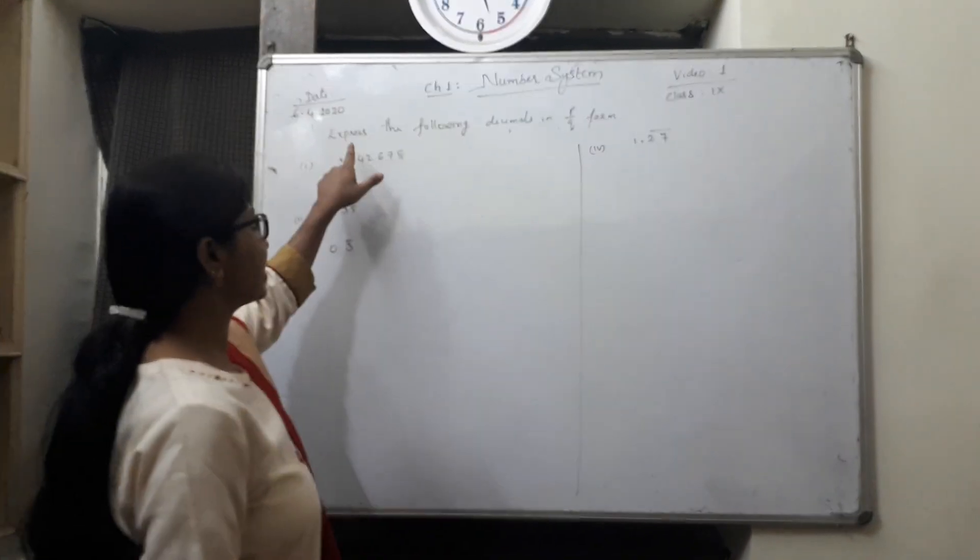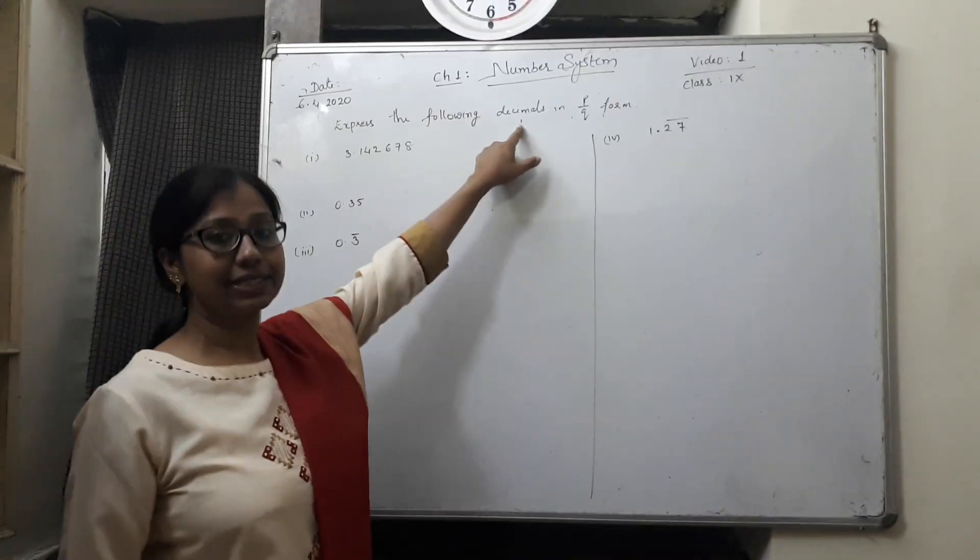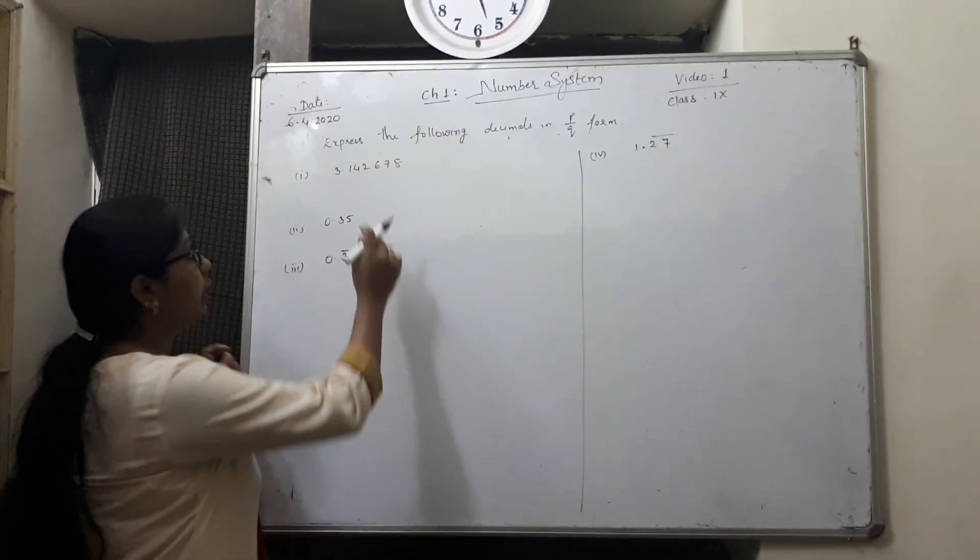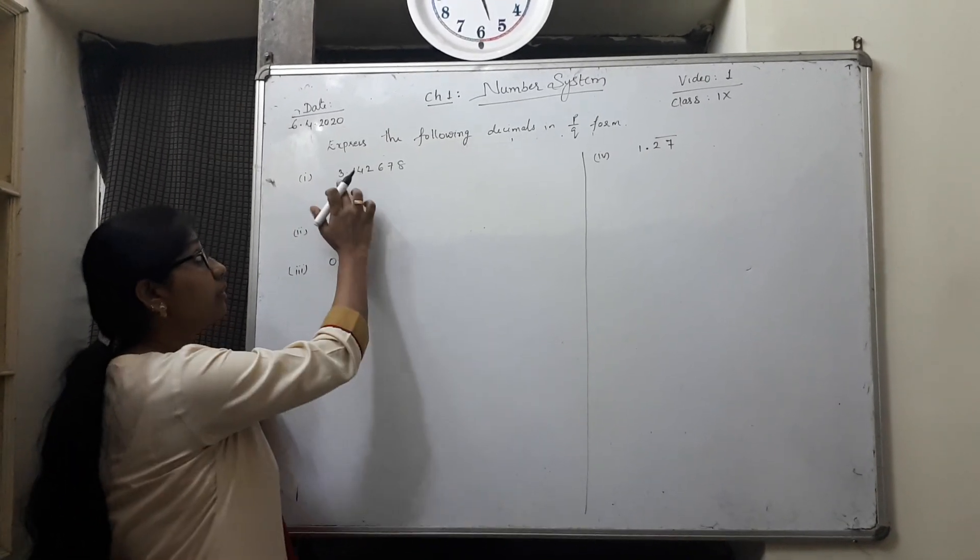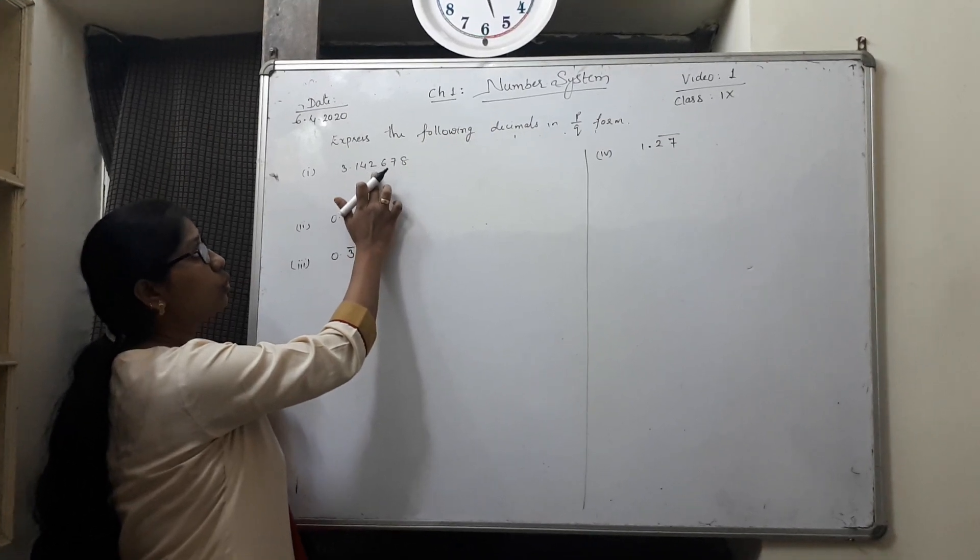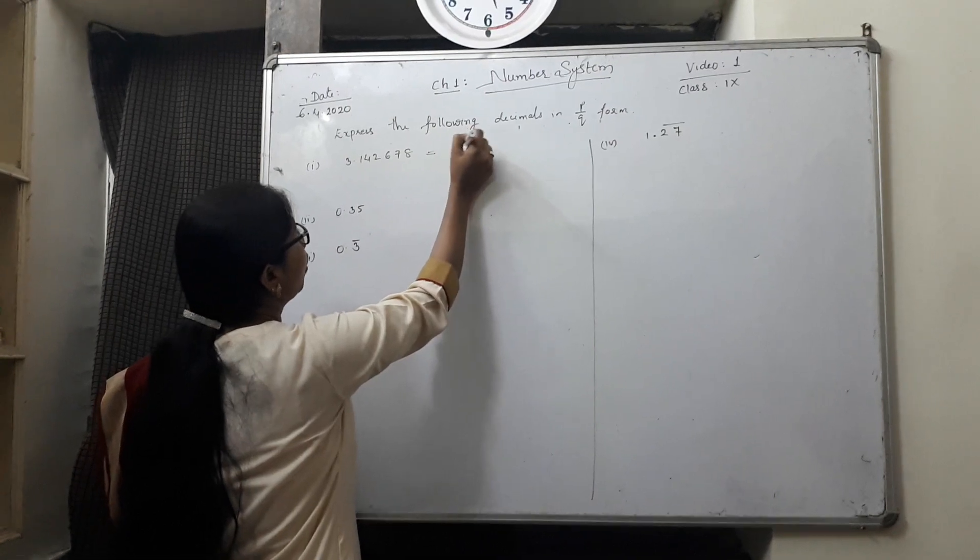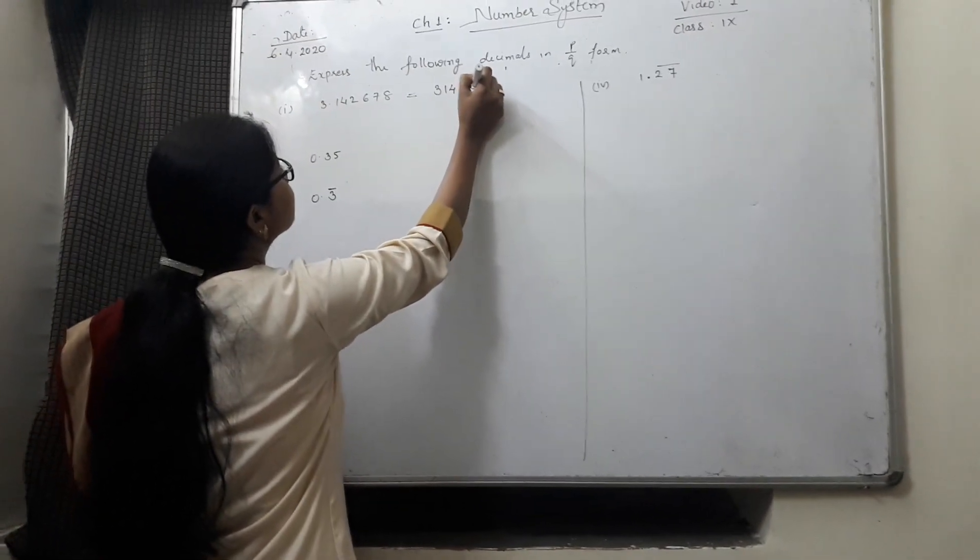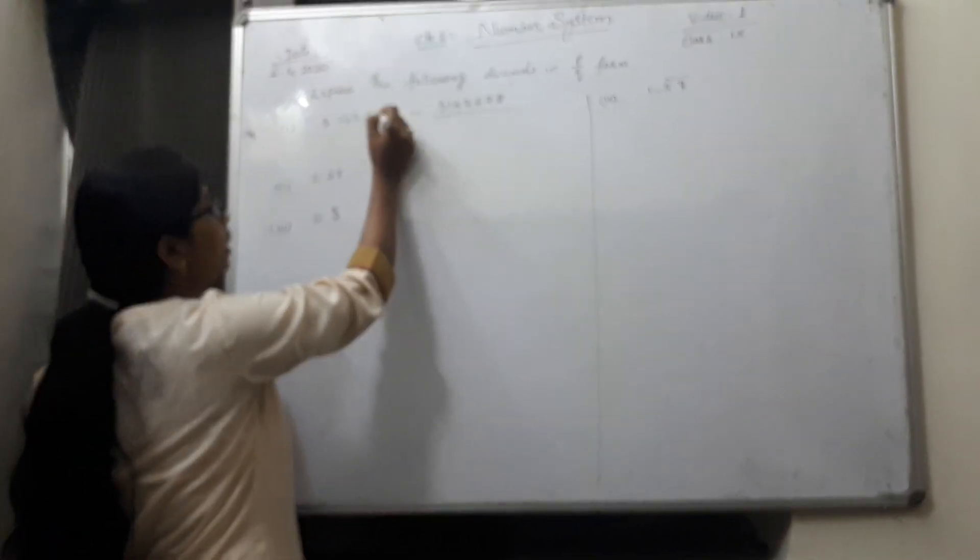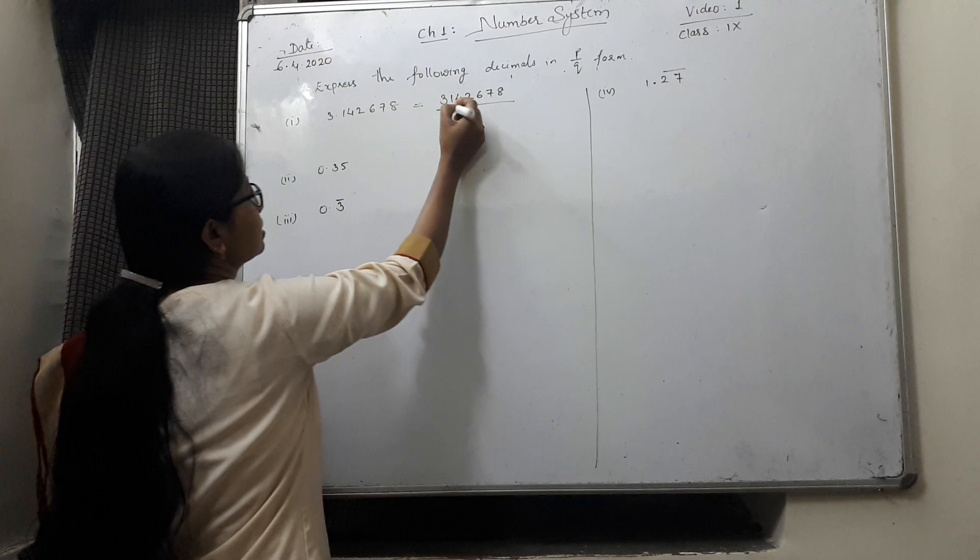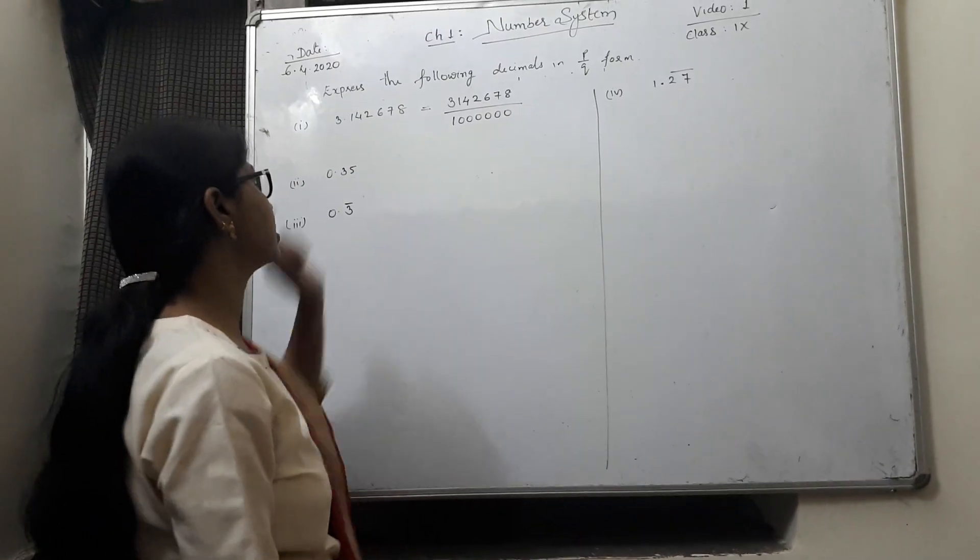If the decimal is terminating, you have already said that P by Q form, you can express the following decimal in P by Q form. Now, if the decimal is terminating, you have already did in your class 8, 3.142678. The method is 3142678. We multiply and divide by that many zeros, means 1, 2, 3, 4, 5, 6. This will be our answer for the first one.